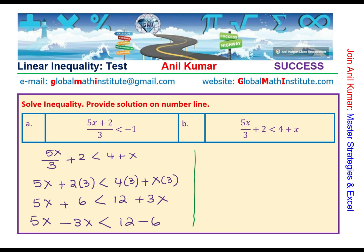Let us simplify. 5x minus 3x is 2x, which is less than 12 minus 6, which is 6. Dividing by 2, we get 6 divided by 2, or x is less than 3.